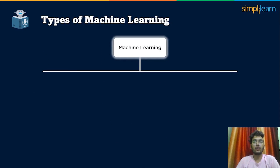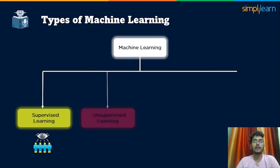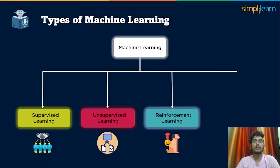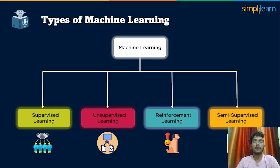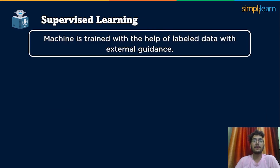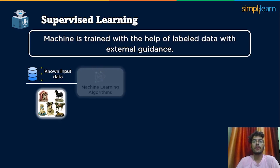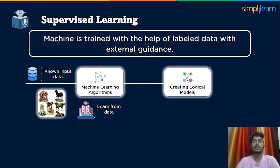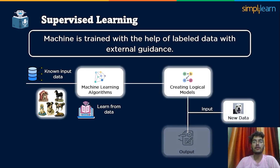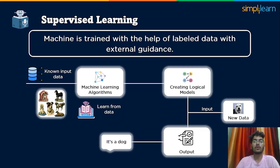Machine learning is classified into four types: supervised learning, unsupervised learning, reinforcement learning, and semi-supervised learning. In supervised learning, the machine is trained with the help of labeled data with external guidance, and the model is given a small perfected dataset to work with. For example, if we input data as an image having known labeled data of dogs, the machine will learn and create logical models. When we input unknown data, the model will categorize them as per their similarities and patterns — that is, we can easily sort the unknown input as a dog.